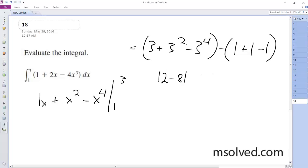12 minus 81 minus 1. So we end up with negative 69 minus 1, which is negative 70.